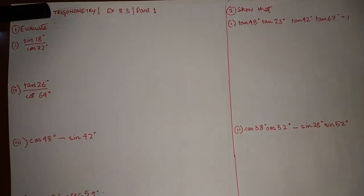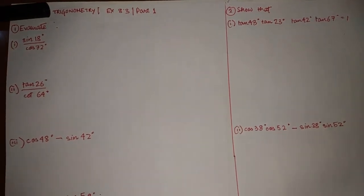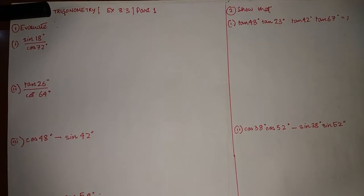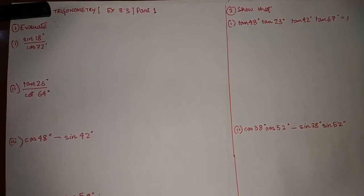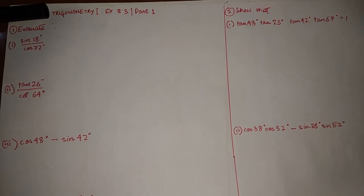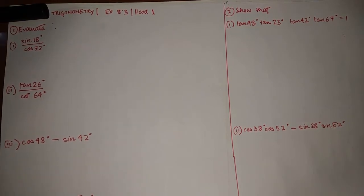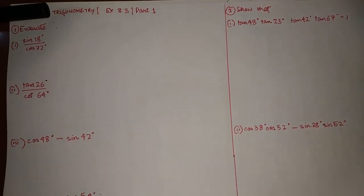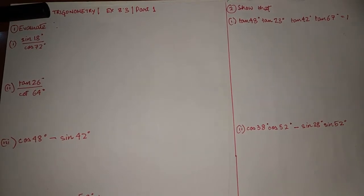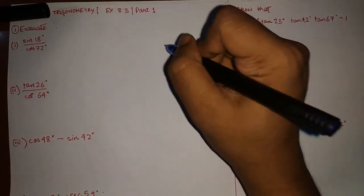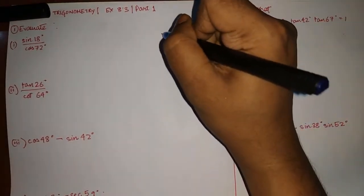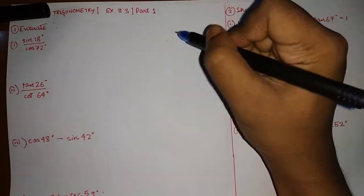Hello students, welcome to Rational Classes. Today I am going to do Exercise 8.3 of NCERT Maths. Without wasting any further time, let's jump into the questions. In this exercise, you just need to apply one formula — how to convert one trigonometric ratio to another using these three formulas.